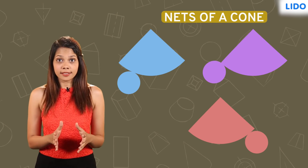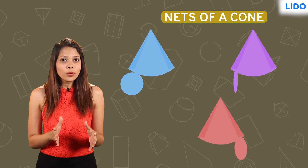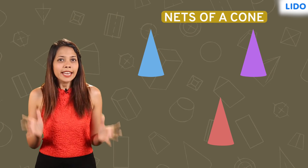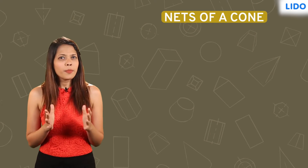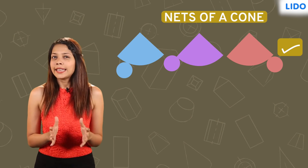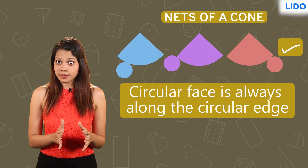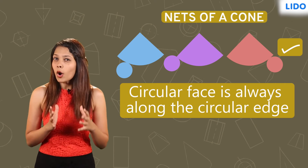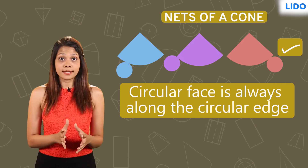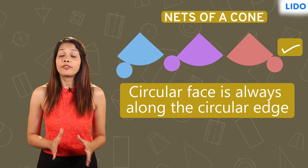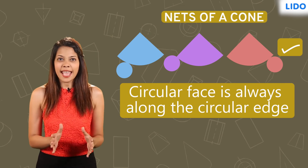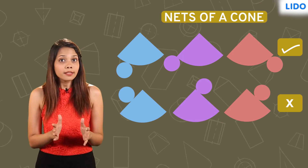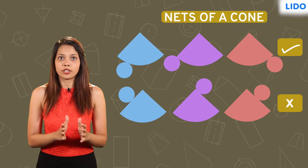Just like cylinders, cones can be formed using any of these nets. Remember that in case of cones, the circular face is always placed along the curved edge of the other face and never along the other two straight edges.